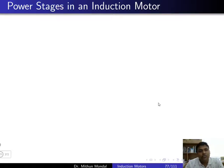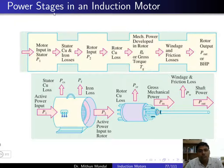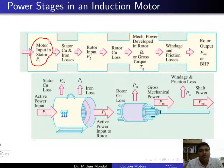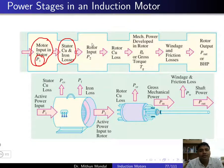Welcome to this lecture on induction motors. We are going to discuss the power stages in an induction motor. This is the flow chart showing power flowing from input to output. The motor input given to the stator is taken as P1. Subtracting the stator copper and iron losses from P1, we get the rotor input P2.